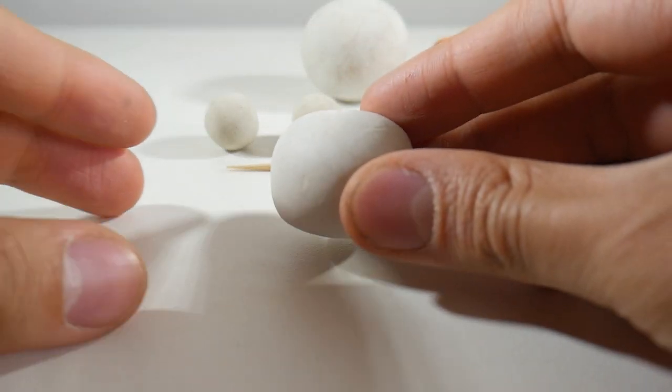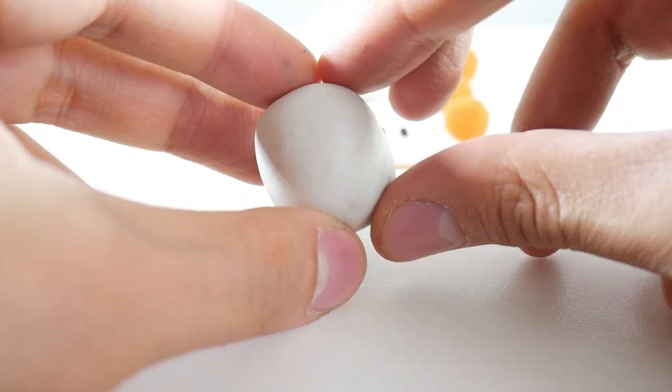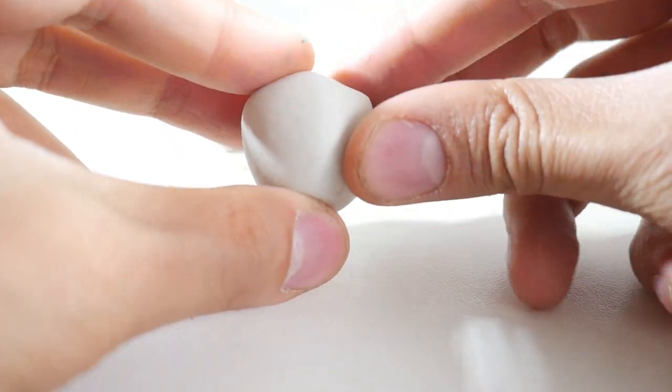Let's start with our duck's head. Take a ball of white clay and pinch it at the top to mold it into the shape you see on the screen right now.